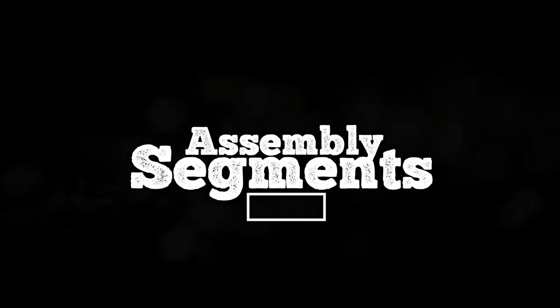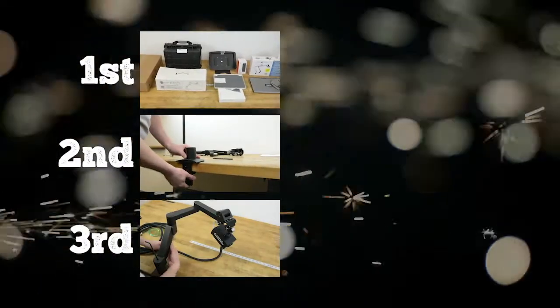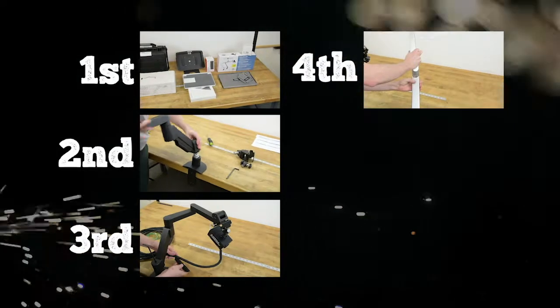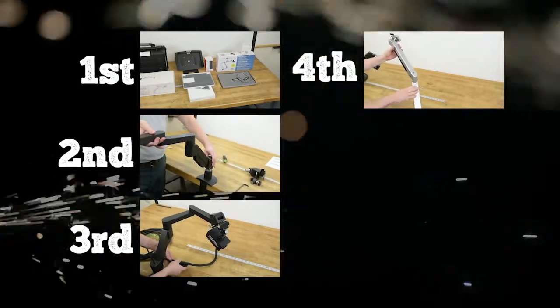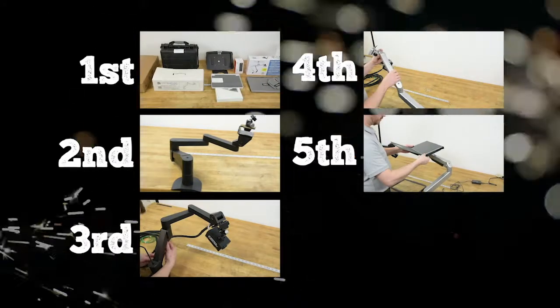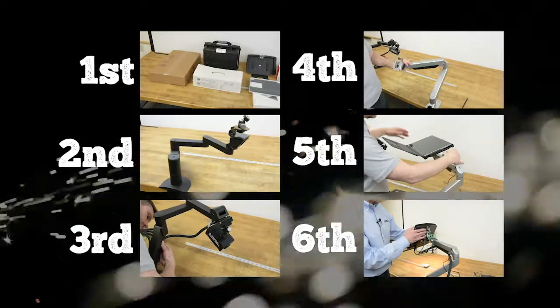In this video, we've broken down the system assembly into six segments. First, we're going to unbox the equipment. Second, we're going to assemble the camera arm. Third, we're going to put the camera into the arm and show you how to adjust that. Fourth, we're going to assemble the computer arm and put that on the table. Fifth, we're going to put the computer in the case and show you how to wire that up. And lastly, sixth, we're going to power everything up and go through a checklist to make sure everything is ready to go.